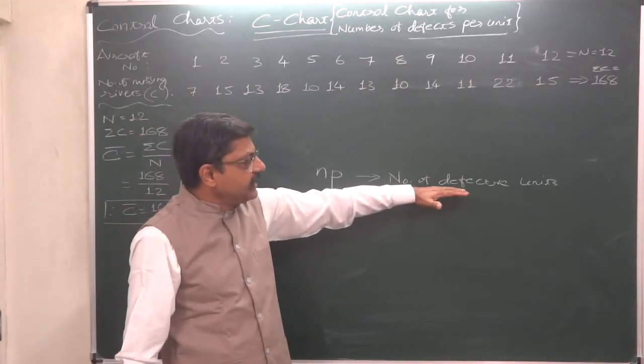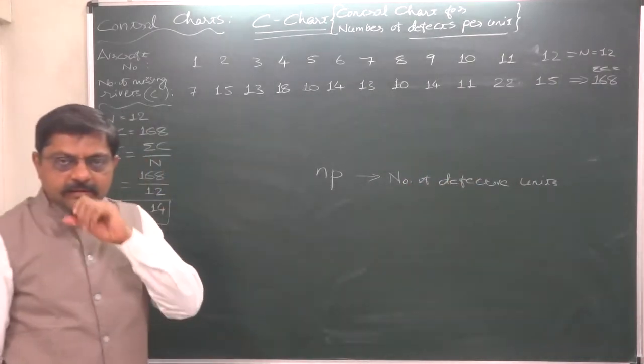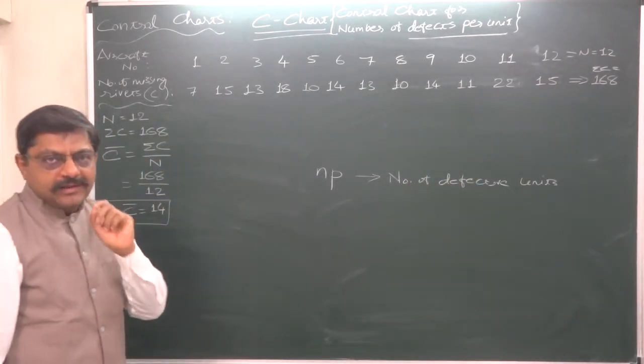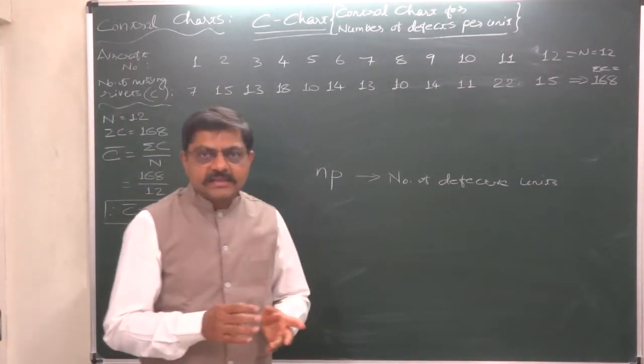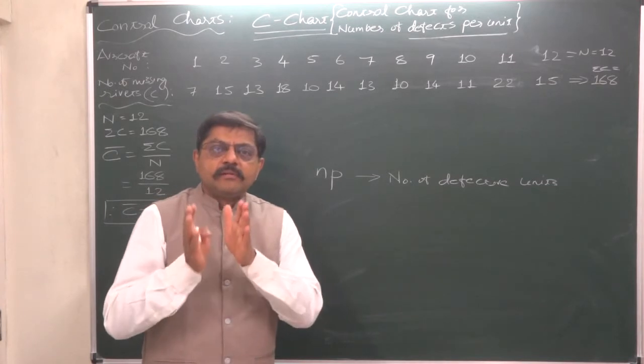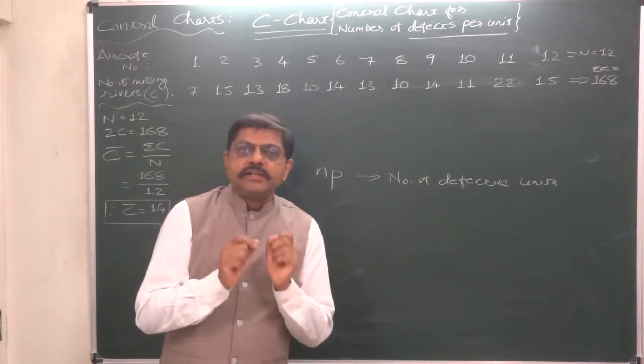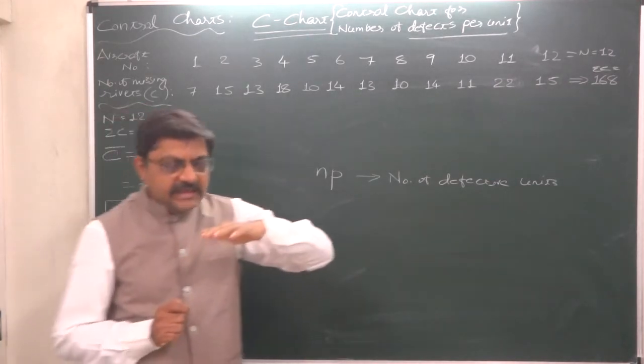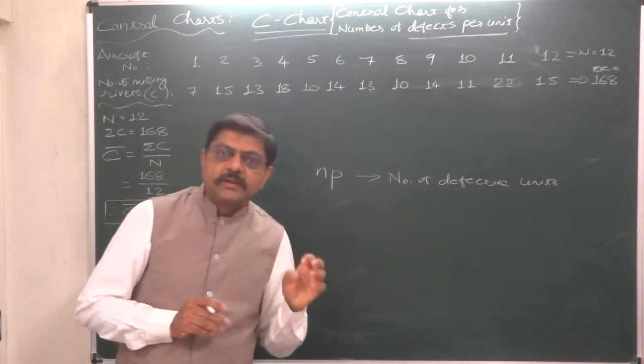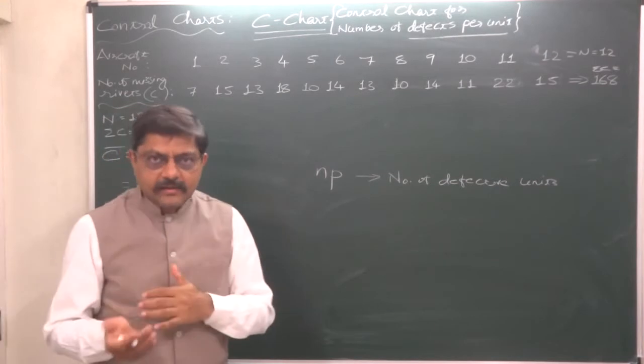The sample is sufficiently large, and we study the sample and find the number of units with predefined defect. That means in each and every defective unit there is a similar kind of defect which we have defined earlier.